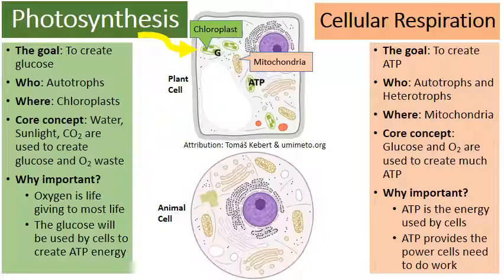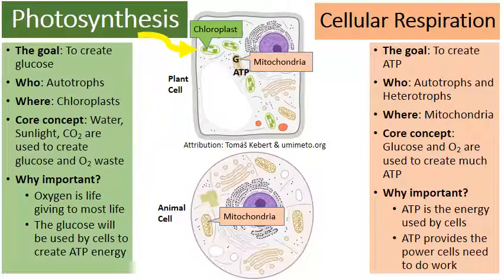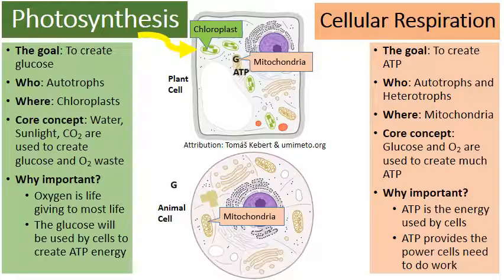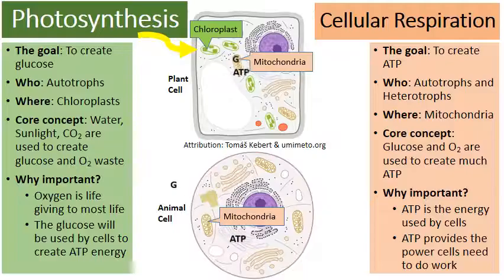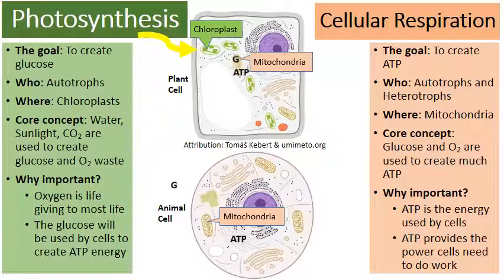Looking at the picture on the bottom — an animal cell — there's no chloroplast, but there are still mitochondria. Animal cells need ATP but don't make glucose themselves. How do animal cells get glucose? We get it from the outside by consuming food. The glucose from food is digested and eventually makes its way into our cells, absorbed into the mitochondria, which create ATP — the energy used by cells to do their work. I hope this connection between photosynthesis and cellular respiration has been helpful. Thanks for watching.